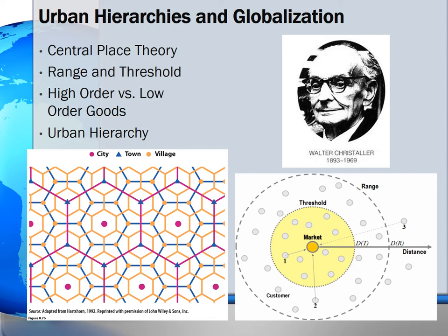In cities, either high order goods, such as car dealerships, rare bookstores, and specialty shops, or low order goods, such as groceries and gasoline, could be found. However, low order goods would only be located in the village level.